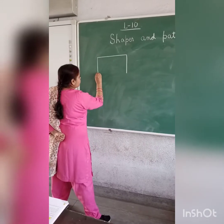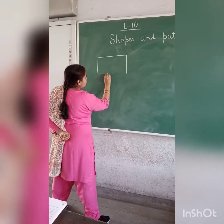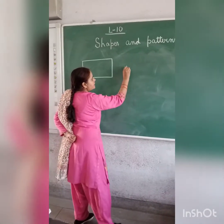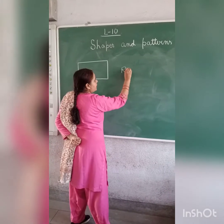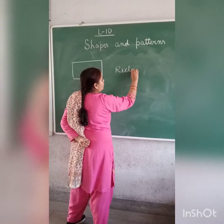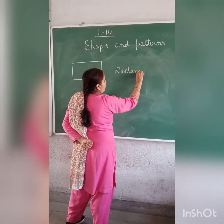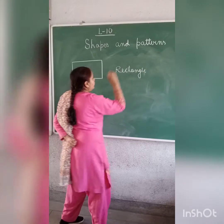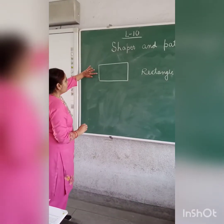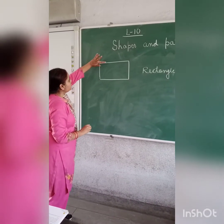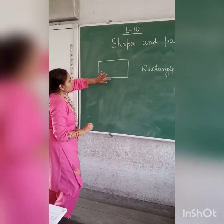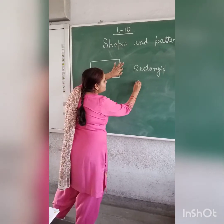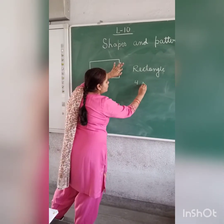Which shape is this? Yes! This one is a rectangle. Now you all are going to tell me how many sides are there? 1, 2, 3, and 4 — how many sides? 4 sides.